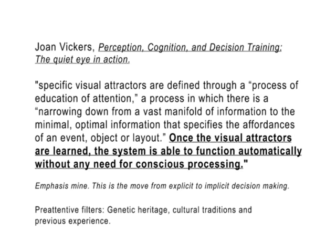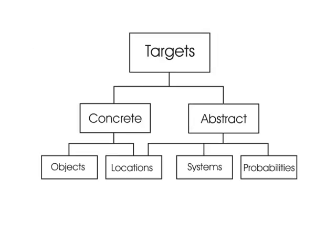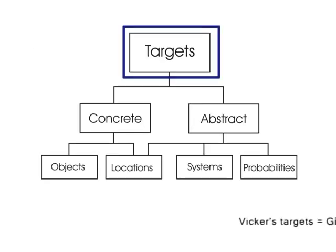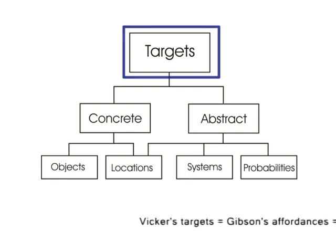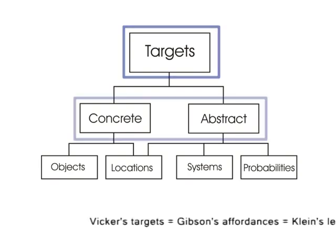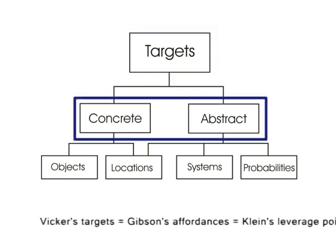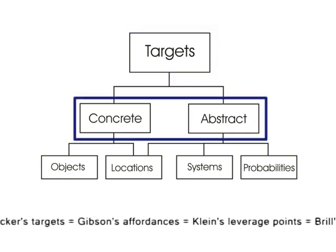Our visual system is part camera, taking in the scene, and part projector, illuminating different screens. The pre-attentive filters search the environment for meaningful targets. These targets exist in two categories: concrete and abstract.